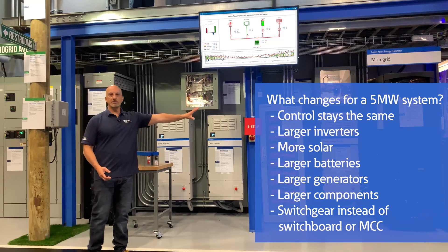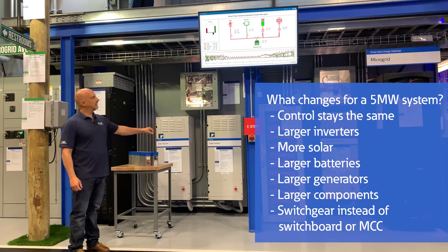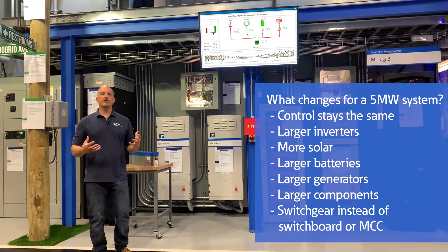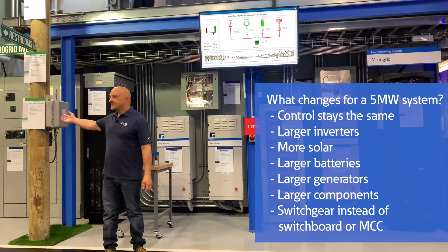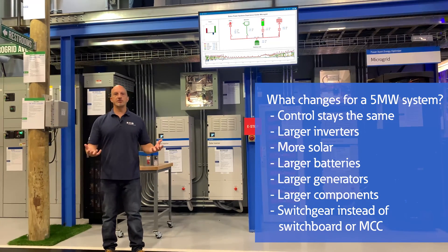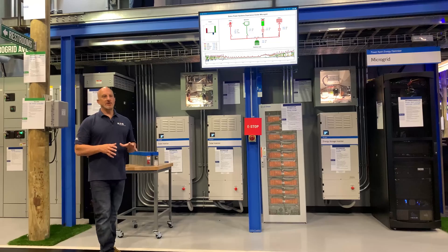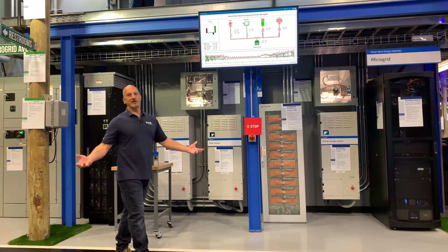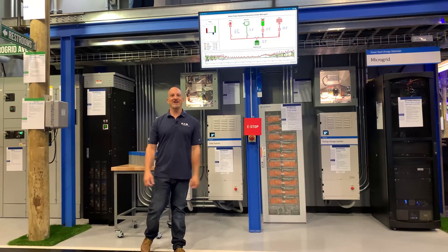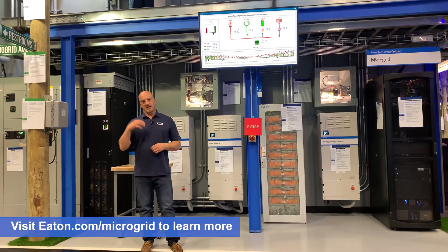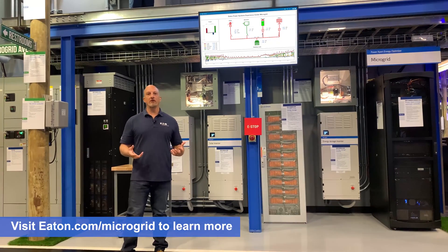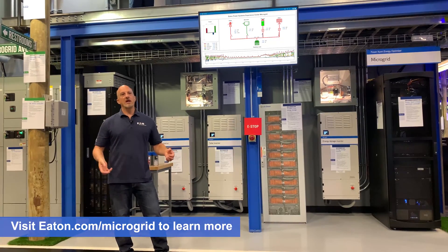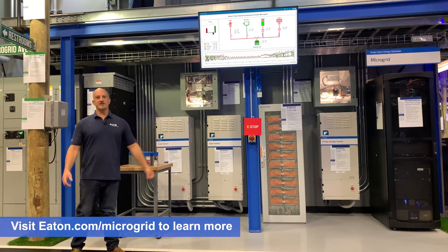What if I wanted to go to a 5 megawatt system? The controls and inverters would be bigger, the solar would be bigger, the batteries would be bigger — all components would scale up. Instead of a motor control center I would use switchgear. Having a system like this lets us run through all the settings and do some really cool stuff. We encourage you to come here as part of a tour and see this in person. This is our microgrid at the Power Systems Experience Center.